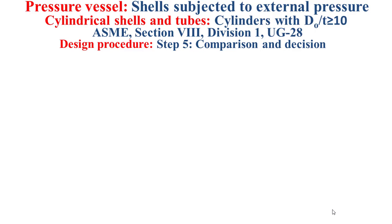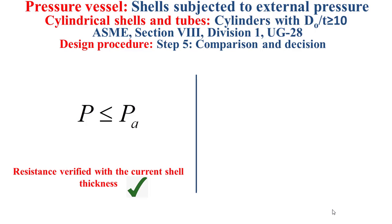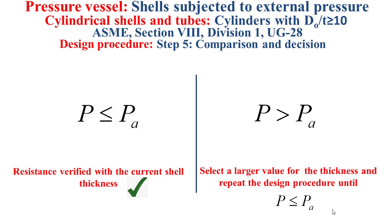Step five of the design procedure is about the comparison and decision. We compare the applied external pressure to the maximum allowable external pressure PA. Case 1: if the applied external pressure is lower than PA, the resistance is verified with the current shell thickness — it's acceptable. Case 2: if the applied external pressure is higher than PA, the resistance is not verified, and we must select a larger value for the thickness and repeat the design procedure until the applied pressure is lower than PA.